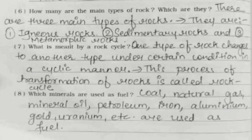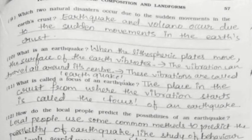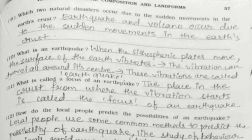Eighth: Which minerals are used as fuel? Coal, natural gas, mineral oil, petroleum, iron, aluminium, gold, uranium etc. are used as fuel. Ninth: Which two natural disasters occur due to sudden movements in the earth's crust? Earthquake and volcano occur due to sudden movements in the earth's crust. Tenth: What is an earthquake? When lithospheric plates move, the surface of the earth vibrates; these vibrations are called an earthquake. Eleventh: What is called the focus of an earthquake? The place in the crust from where the vibration starts is called the focus.